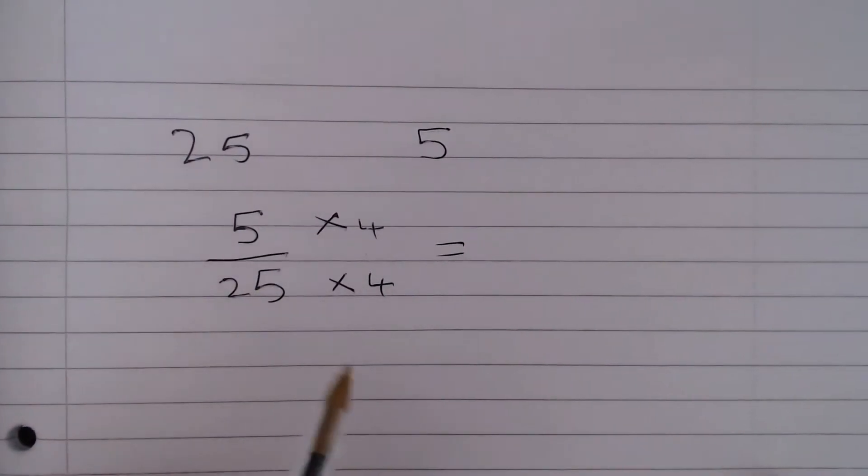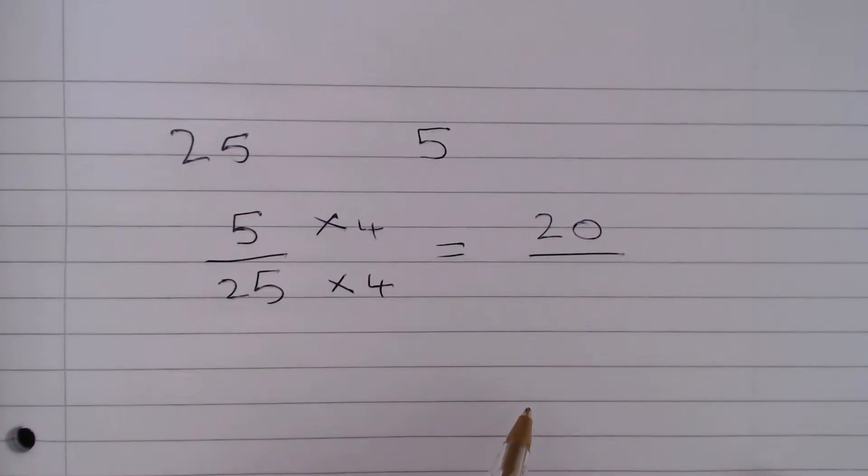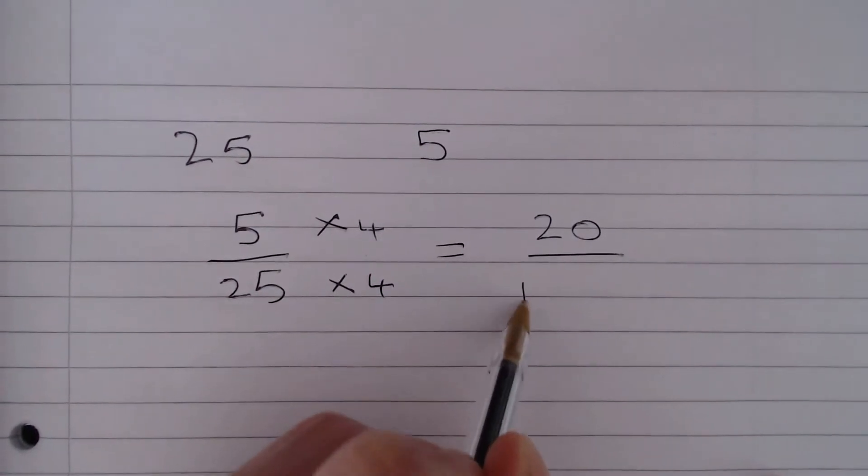And if we do that, on the top we are going to have 20, 5 times 4 is 20, and on the bottom we are going to have 100.